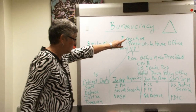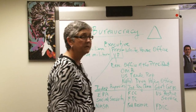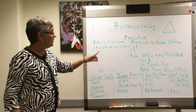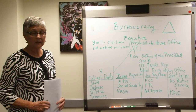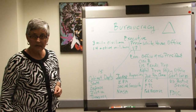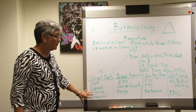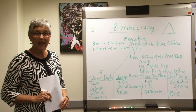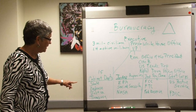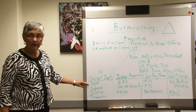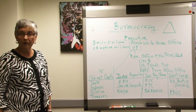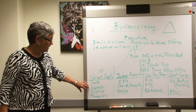The heads of the cabinet departments are called secretaries — in other countries they might be called ministers, but here they're called secretaries. They are appointed by the president, they are political positions, and they require the advice and consent of the Senate. They head up their department and also serve on the president's cabinet to advise the president — a very important job. You should know who is the current Secretary of State, Secretary of Defense, Attorney General, and Secretary of the Treasury.